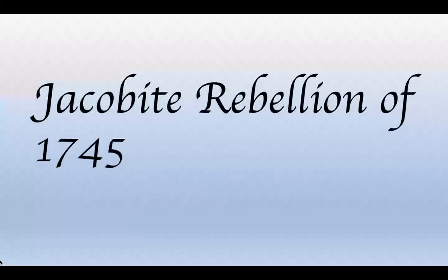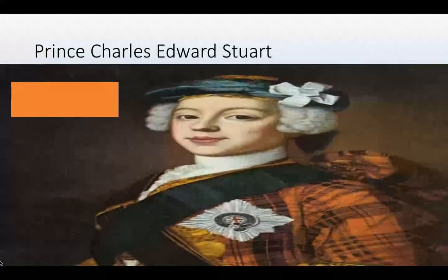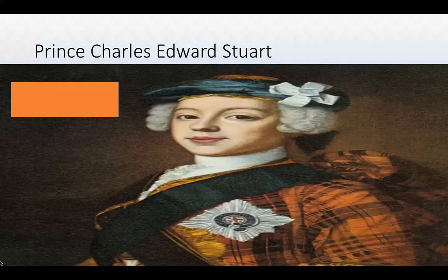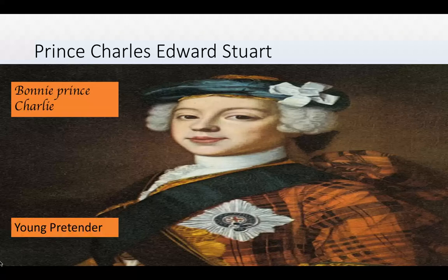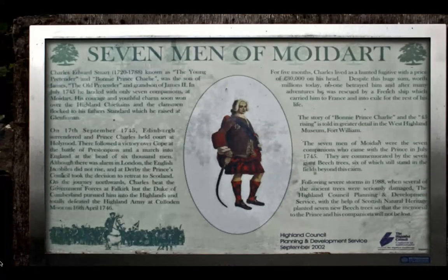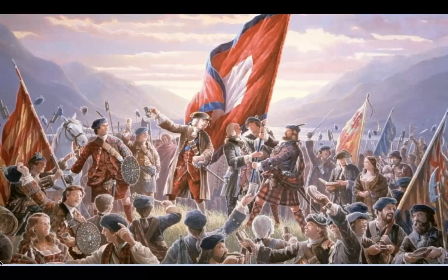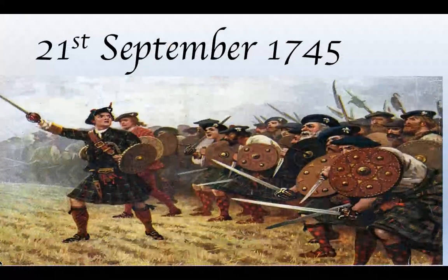The Jacobite Rebellion of 1745 was the last and most famous. The commander of the Jacobite army was Prince Charles Edward Stewart — also known as Bonnie Prince Charlie and the Young Pretender. He had planned to invade southern England with seven thousand French troops, but in 1744 a great storm devastated the French navy and ruined those plans. The young prince sailed to Scotland with just seven men, known as the Seven Men of Moidart.